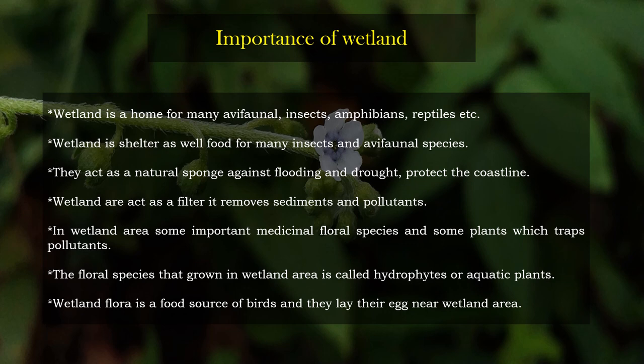Wetlands in Bonae Forest Division is a home for many insects, amphibians, and reptiles. Wetland is a shelter as well as a food source for many insects and epifaunal species. They act as a natural sponge against flooding and drought, and protect the coastline. Wetlands act as a filter — they remove sediments and pollutants. In wetland areas, there are important medicinal floral species and plants which trap pollutants. The floral species that grow in the wetland area are called hydrophytes or aquatic plants.